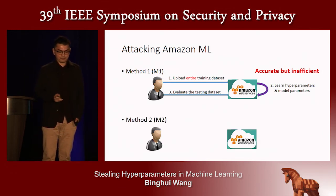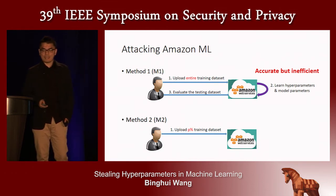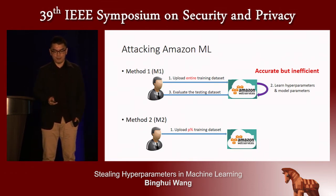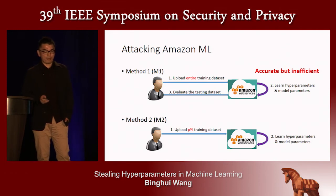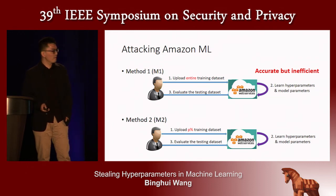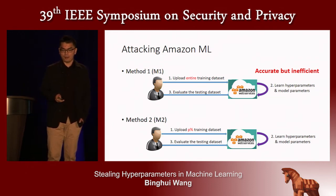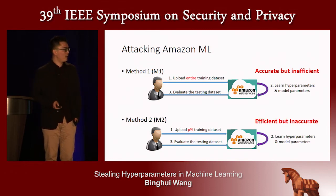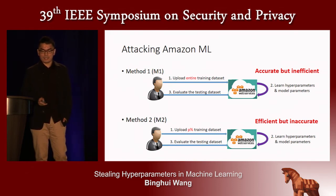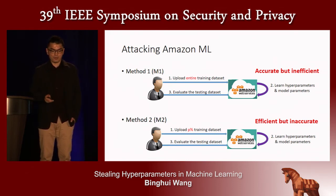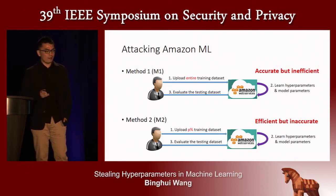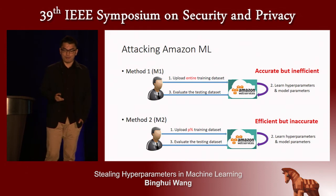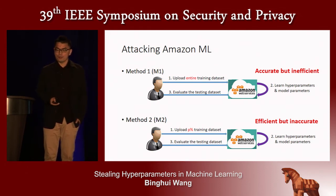Method 2: a user uploads a subset of the training dataset to Amazon Machine Learning, which learns hyperparameters and model parameters over this subset. The user then evaluates the testing dataset by querying the model trained on this subset. This method is efficient because only a subset is used for hyperparameter learning, but it is inaccurate because only a subset is used to learn model parameters.